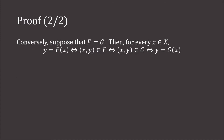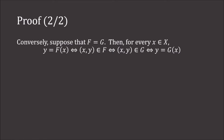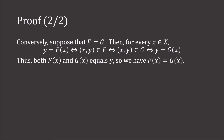Conversely, suppose F equals G. Then for every x in X, y equals f(x) if and only if (x, y) is in F, which holds if and only if (x, y) is in G (since F and G are the same), which is true if and only if y equals g(x). So f(x) and g(x) both equal y, meaning f(x) must equal g(x).